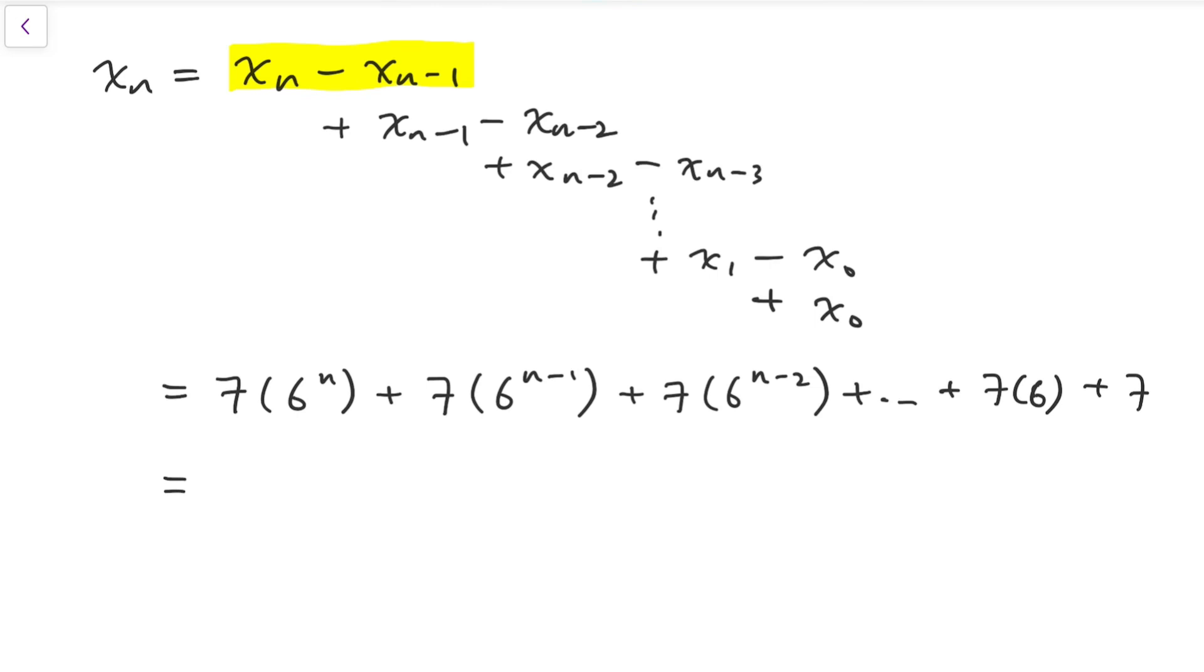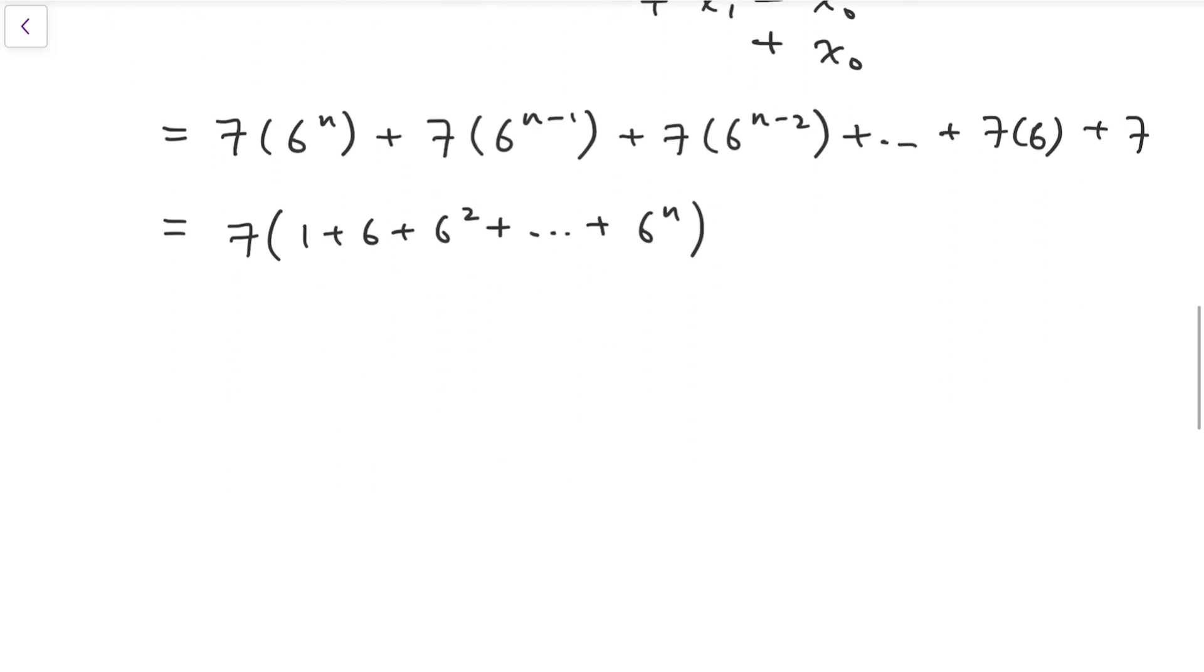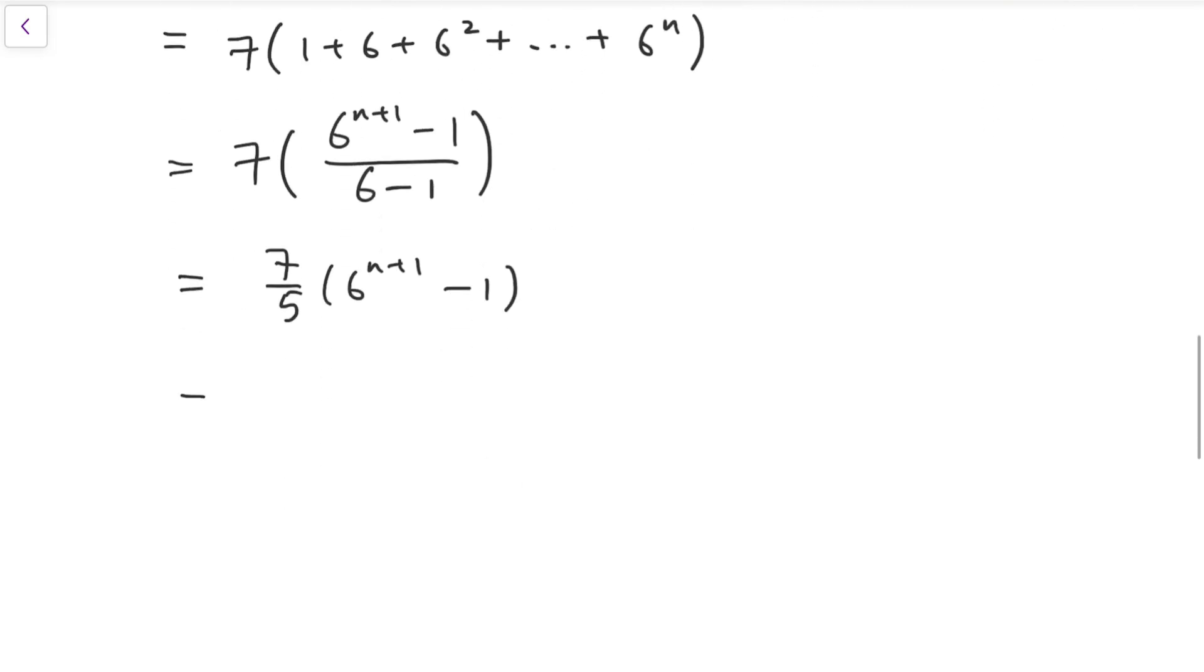So, all the terms have a common factor 7. So I can take that out. And I have this geometric series. And we can use the formula for the geometric sum. And simplifying, we have this result: 7 over 5 times 6 to the power n plus 1 minus 1. Or we can rewrite that as 42 times 6 to the power n minus 7 all divided by 5. And that is xn in general.